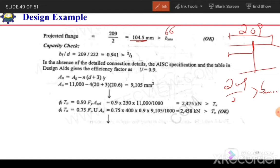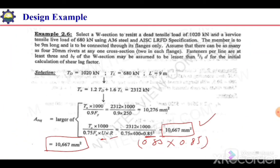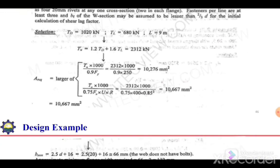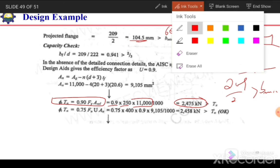For the tension yielding capacity check, we use 0.9 × F_y × A = 0.9 × 250 × 11,000, which gives 2475 kN. The factored applied load T_u is 2312 kN. Since 2475 kN > 2312 kN, the tension yielding check is satisfied.